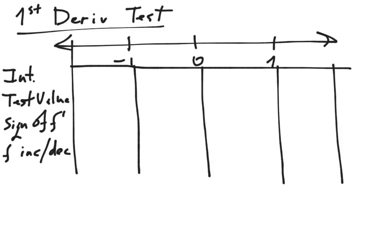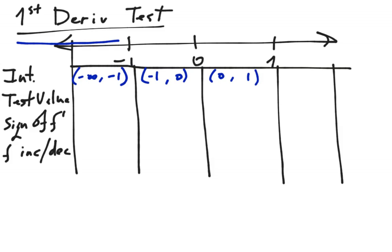For the test value, pick a number that falls within each interval. Between negative infinity and negative 1, choose negative 2. Between negative 1 and 0, choose negative one-half. Between 0 and 1, choose positive one-half. And for 1 to positive infinity, choose 2.